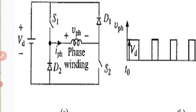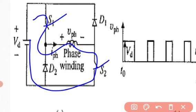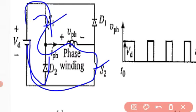To energize the phase, semiconductor switches S1 and S2 are closed, which connects the phase winding to the DC source voltage VD. The phase current IPH builds up quickly. There is no series resistance here, unlike the previous circuit where two resistances were used. Without resistance, the current builds up almost instantly until it crosses the rated current IR.